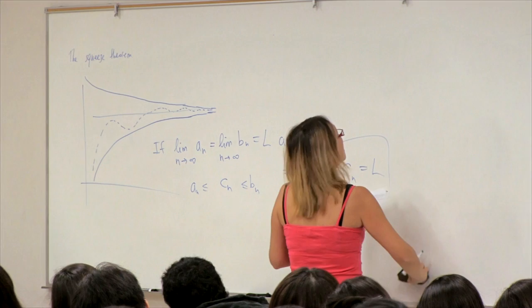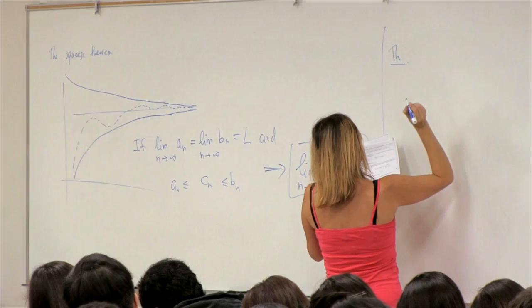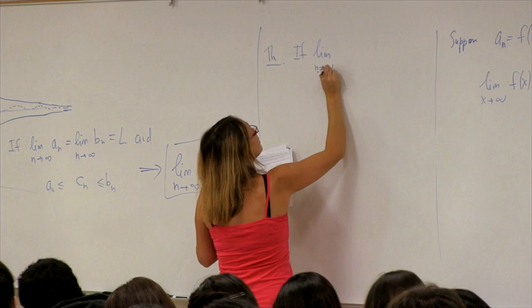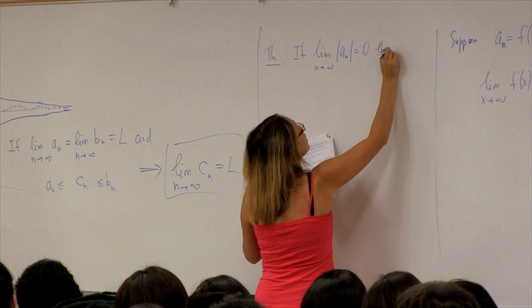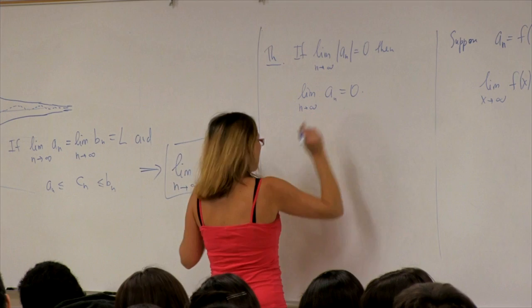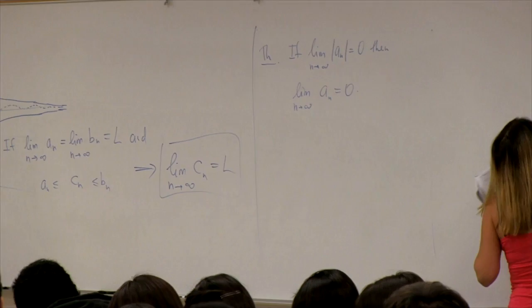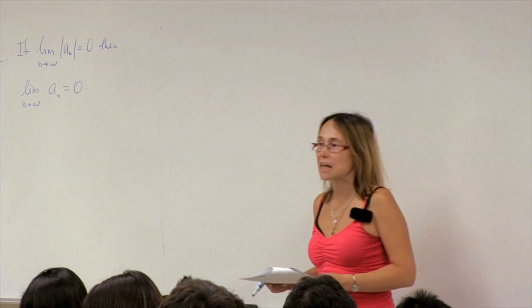Another simple theorem: if lim(n→∞) |an| = 0, then lim(n→∞) an = 0 as well. So if the absolute value of a sequence tends to zero, then the sequence with changing signs will have the same behavior.